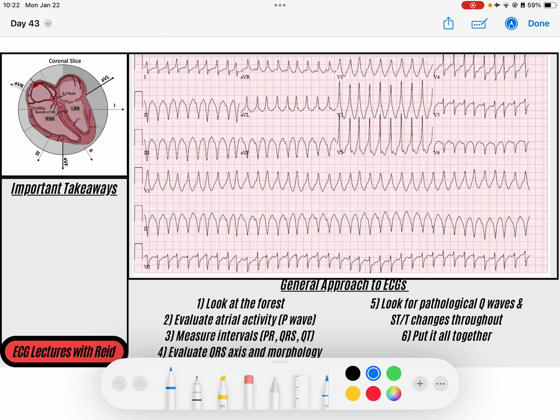The first thing I like to do is look at the forest, and the trees of the forest are my QRSs. You'll notice here that we've got a wide complex QRS that is occurring quite regularly. There's maybe a couple beats that occur a little bit irregularly, but generally it's a pretty regular QRS here and I would say this is a very rapid rate.